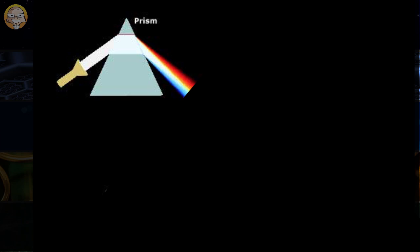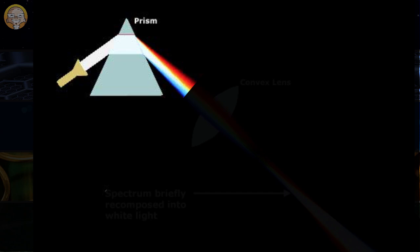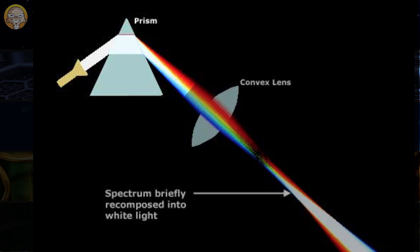So what did Newton actually do? Well, instead of using a prism, Newton actually used a convex lens to recompose the light, similar to what you see here.